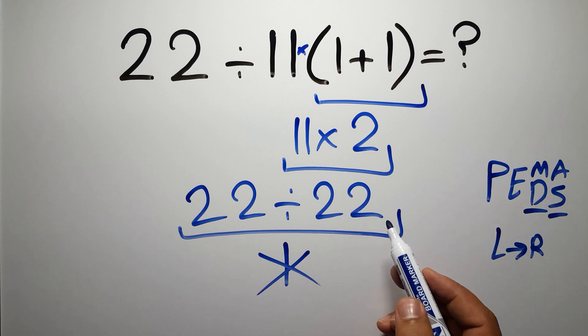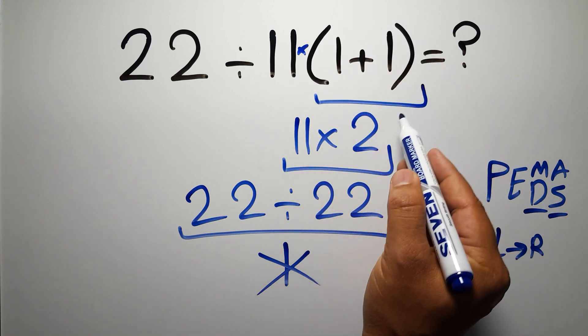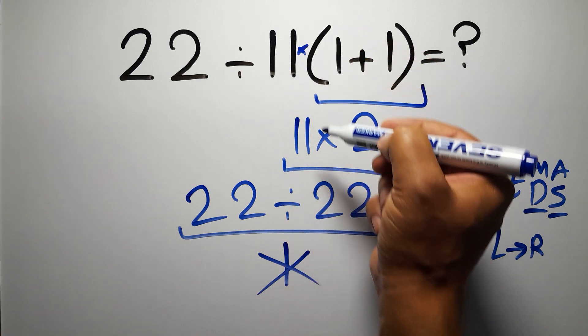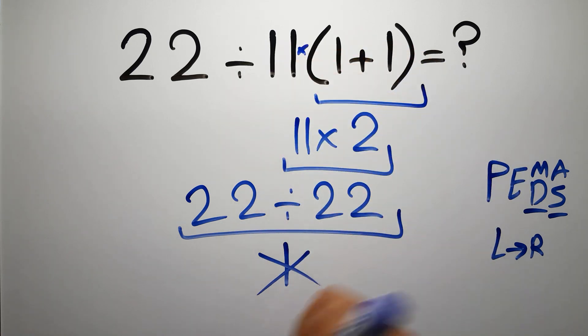So according to the PEMDAS, first we have to do this parentheses, then this division, and finally this multiplication. If we do this multiplication before this division, it is wrong.